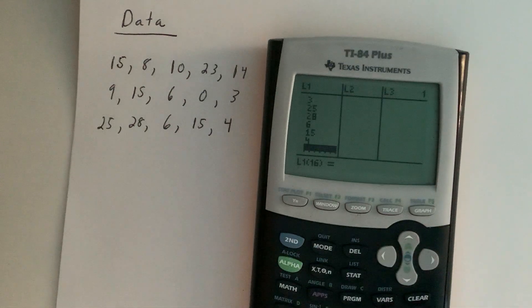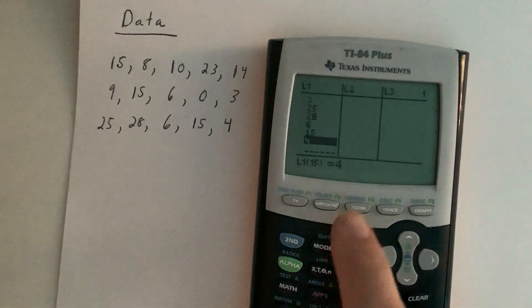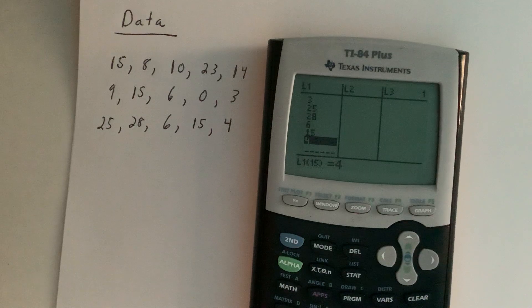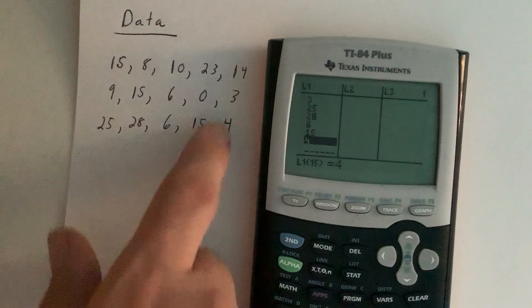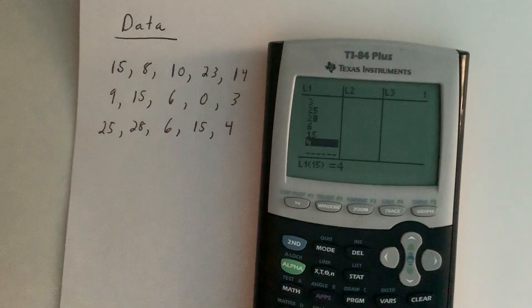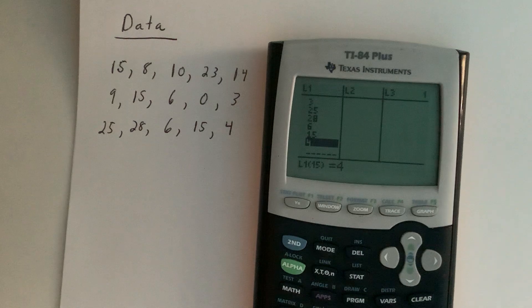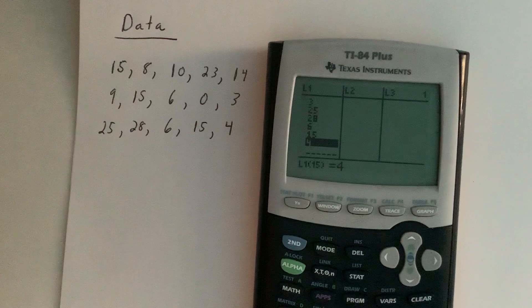Now, something I'd like to call your attention to is if we move our cursor back up to the last data point we entered, which was the 4, you'll notice that it says L1 of 15. What that indicates is that that data point 4 was put into the 15th position. One good way to make sure that you didn't miss anything when typing in your data is you can see that in my data, I had 15 data points, and by this telling me that we're at L1 of 15, I know that I've at least typed in 15 data points.